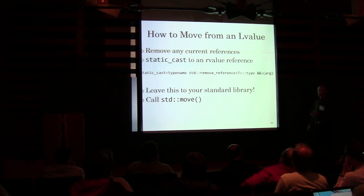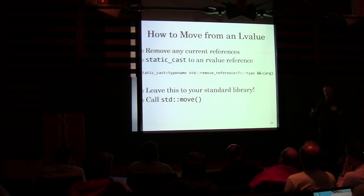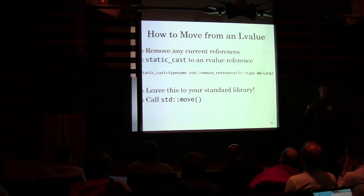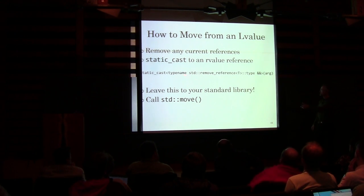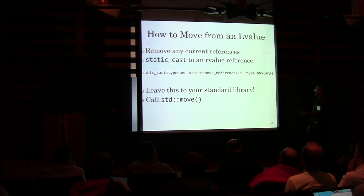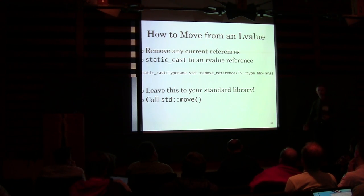Unless you're writing the standard library, use what the standard library provides. It's shorter, it's easier to read, it shows your intent. And std::move moves nothing — there is nothing that physically moves. All you're doing is turning it into an R-value reference as far as the compiler is concerned. Something else has to do the moving.